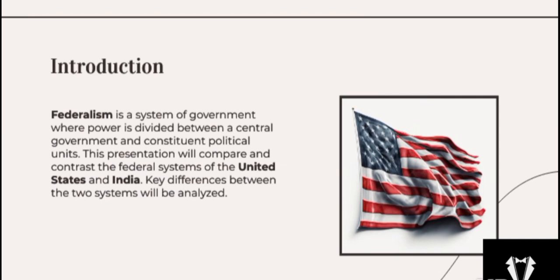Federalism is a system of government in which power is shared between a central government and regional governments. The US and India are both federal countries but they have different ways of dividing power between the national and state levels. In layman's language, it comes down to division of power between the national government and the state government. A primary example of this would be municipalities, panchayats, or the state governments that are playing a huge role in development in India.